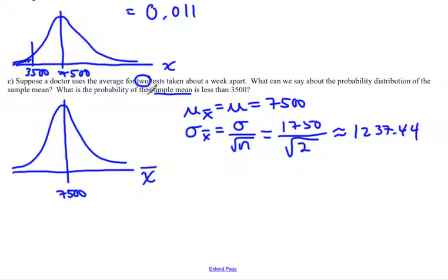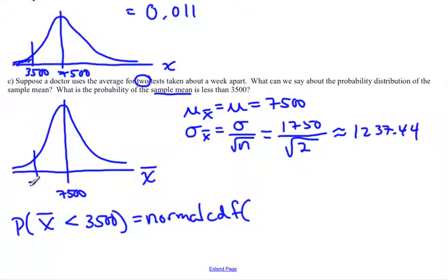Now we want to find the probability of the sample mean, so let's rewrite that: P(x-bar < 3500). Using your technology, your lower limit is negative infinity, upper limit is 3500, mean is 7500. Your standard deviation is new—you no longer use the 1750. Your new standard deviation is the 1237.44 we just came up with.